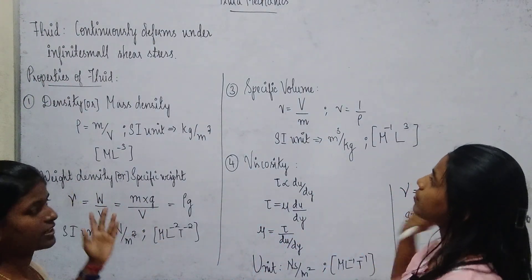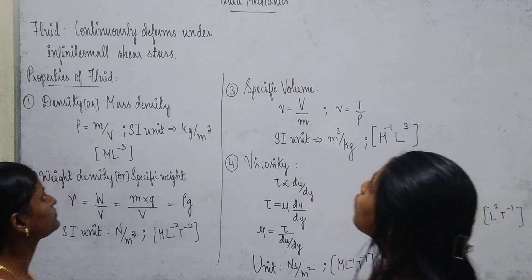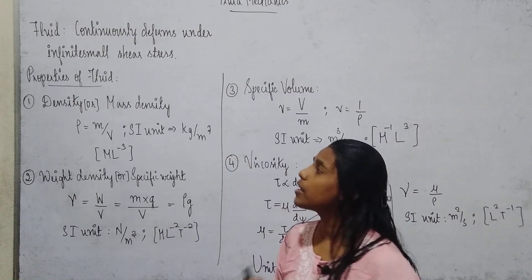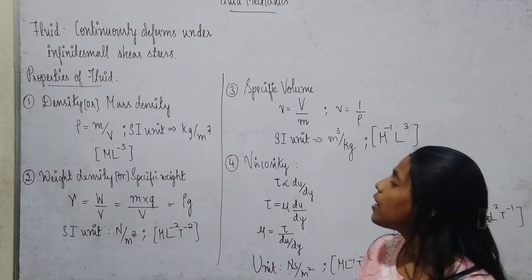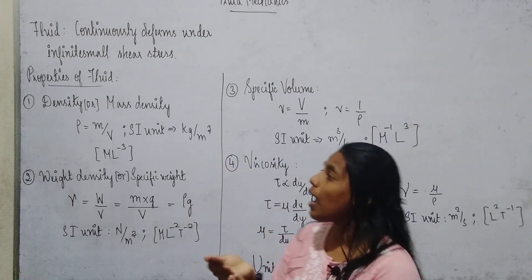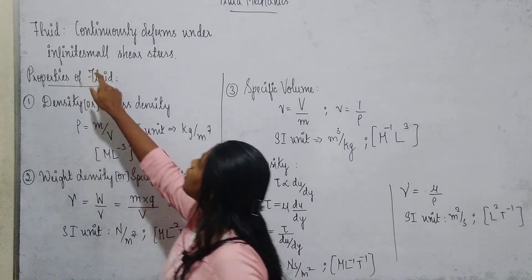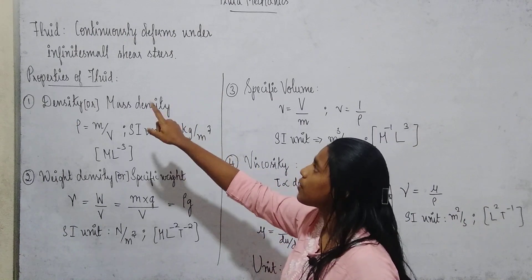What is fluid? Fluid is something which continuously deforms under infinitesimal shear stress. Small is something very small, and more than that, the smallest thing is called infinitesimal. So it continuously deforms under infinitesimal shear stress.